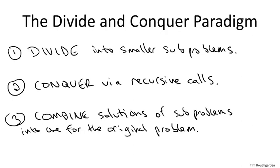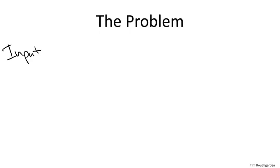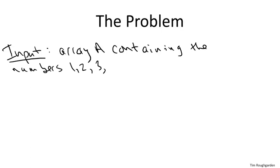Now let's move on to the specific problem of counting inversions and see how to apply this divide and conquer paradigm. So let me begin by defining the problem formally. We're given as input an array A of length n. And you can define the problem so that the array A contains any old distinct numbers, but let's just keep things simple and assume that it contains the numbers one through n, the integers in that range, in some order. That captures the essence of the problem.